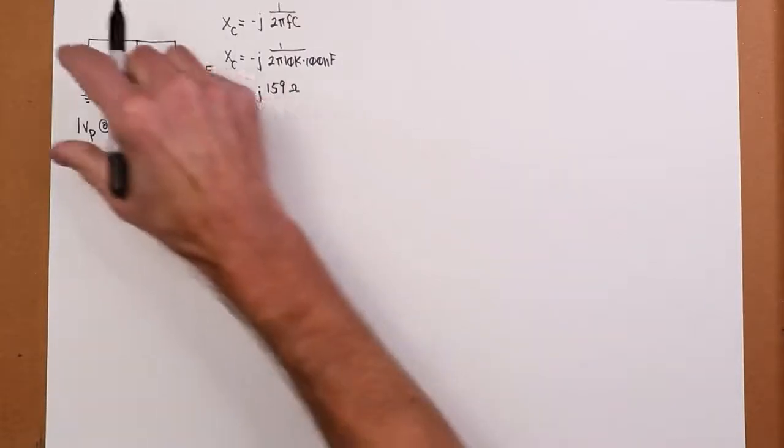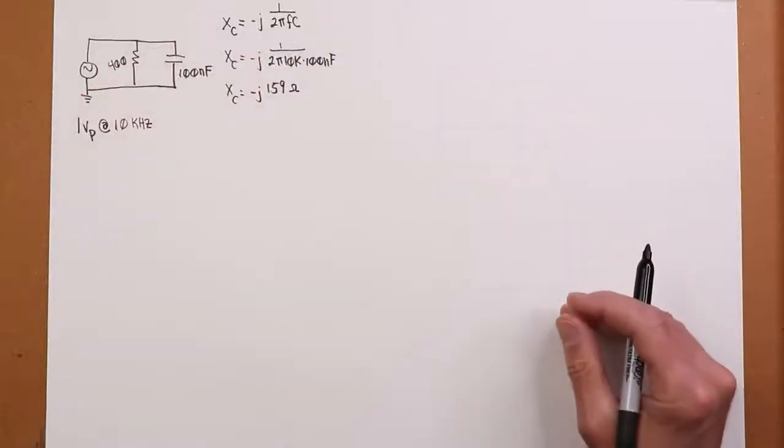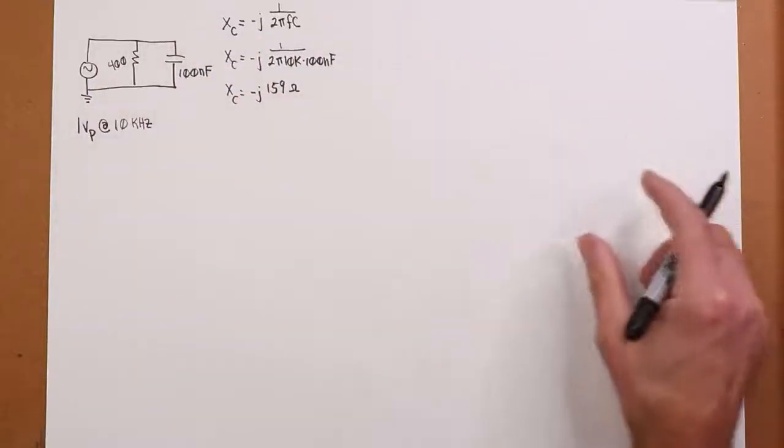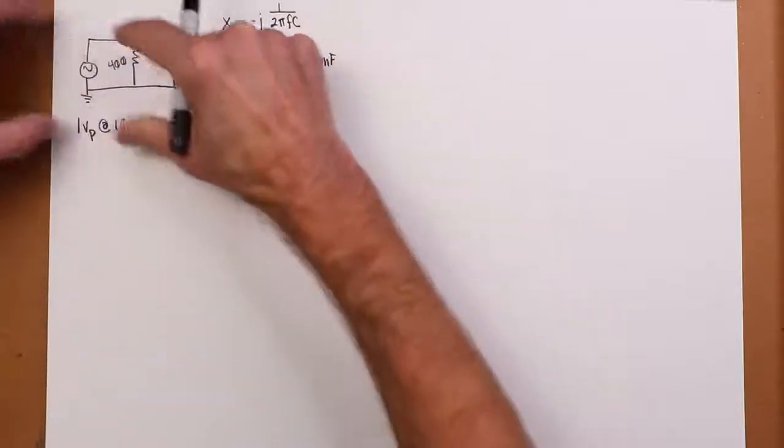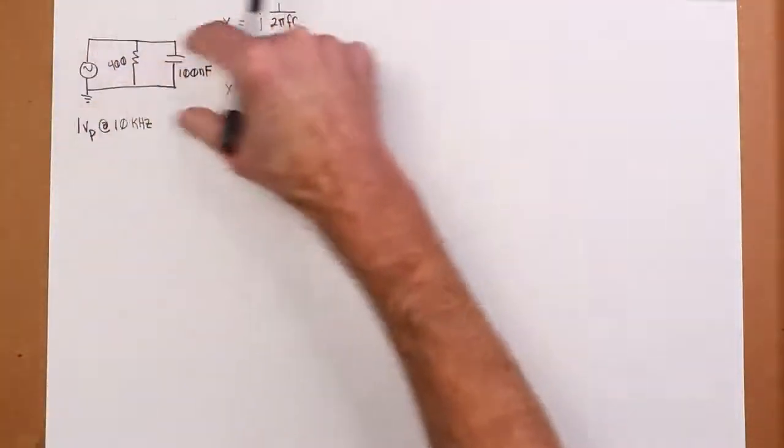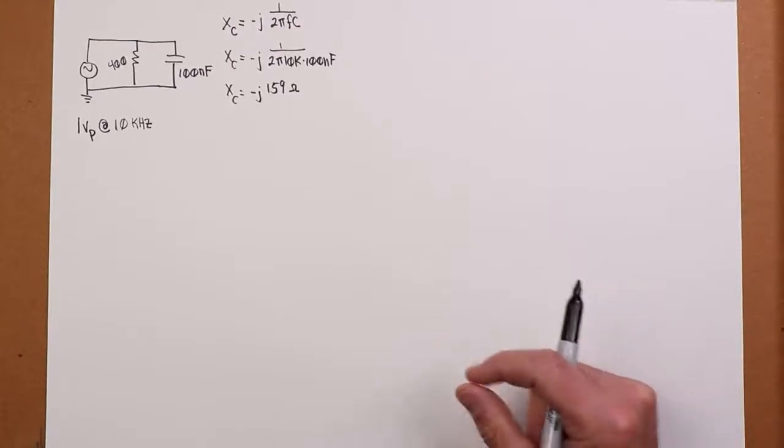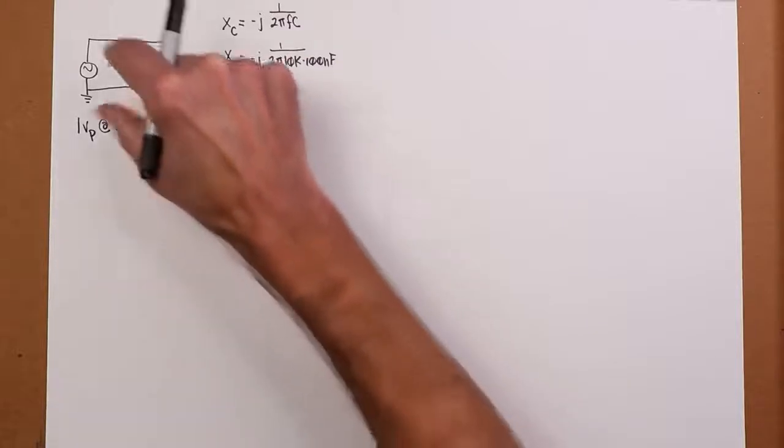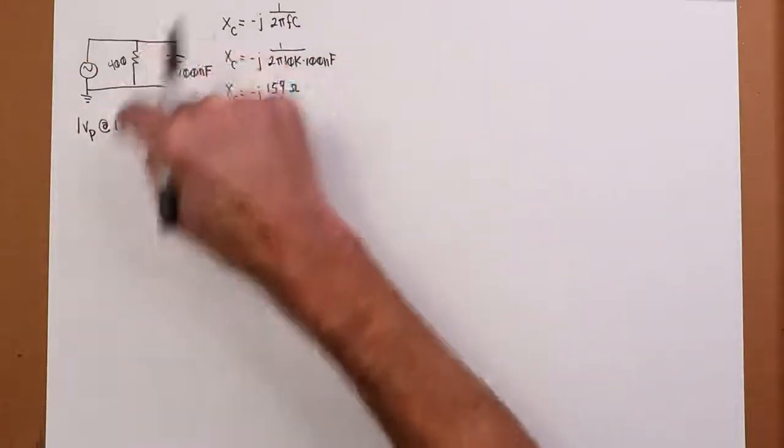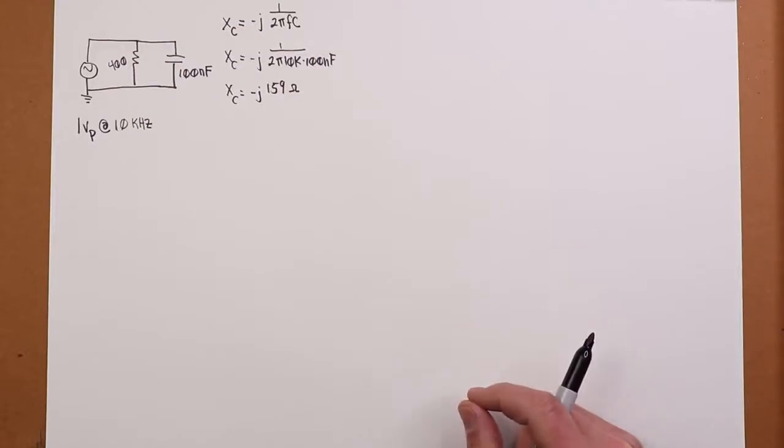One thing we might remember about parallel circuits in the DC case, which would also be true in the AC case, is that the voltage everywhere is the same. There are only two connecting nodes. Everything is connected to that. So the voltage is consistent throughout a parallel connection. So we could immediately find the currents. That's what we're going after here, since the voltage is the same. To find the currents, we could immediately use Ohm's law on that.